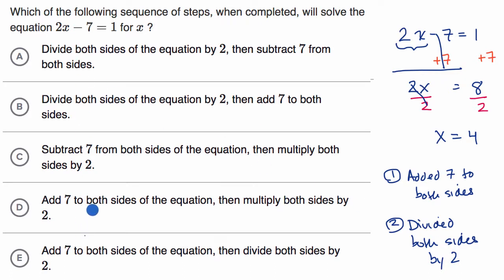Now, which of these choices match up to that? So here it says divide both sides of the equation by two, then subtract seven from both sides. So this is close, but they're dividing by two first, and then instead of adding seven, they're subtracting, and if you divide by two first, it's not clear that adding or subtracting seven is the right thing to do.